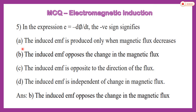The next question is: in the expression E = −dϕ/dt, what does the negative sign signify? The negative sign in Lenz's law indicates that the induced EMF opposes the change in magnetic flux that produces it. So the answer is B.